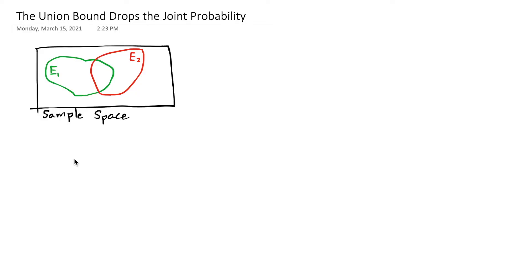This is Neil Patuori. In this segment, I'm going to derive the union bound and talk about how it drops the joint probability.